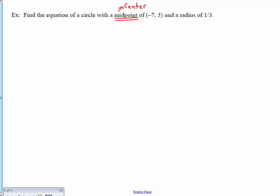Midpoint or center can mean the same thing. This means that they gave us the ordered pair, H, K, and they gave us a radius, R.